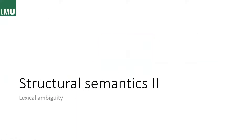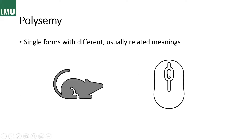Staying with structural semantics, we now go on to lexical ambiguity. First we have to talk about polysemy, which means a single word form has different but related meanings. For example, 'mouse' can either be the animal or the computer mouse, and we can see the relation between these two meanings — they also share some common etymology.